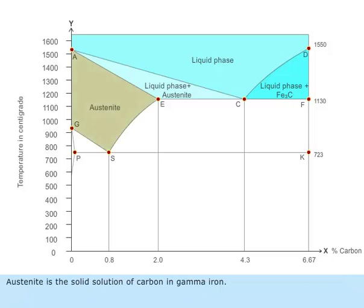Austenite is the solid solution of carbon in gamma iron. Steel solidifies at temperatures along the line AECF.